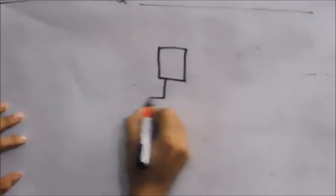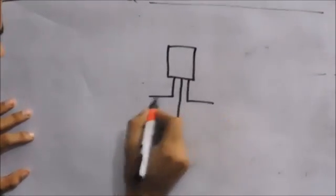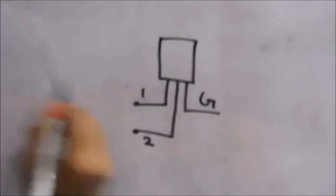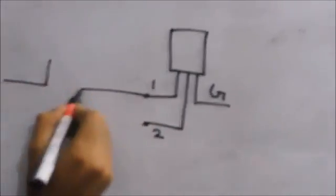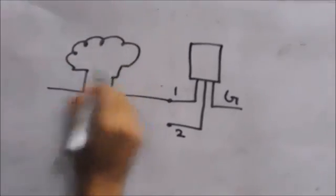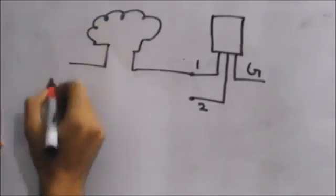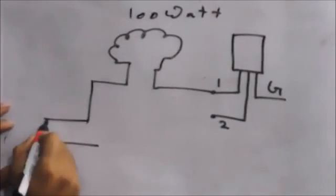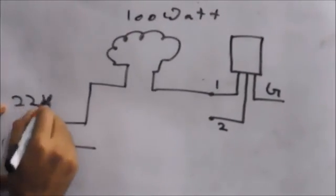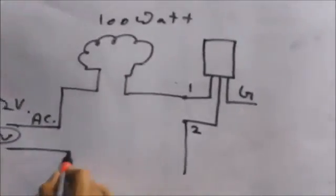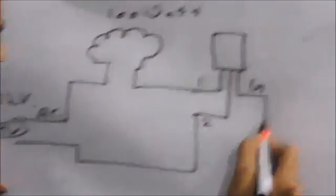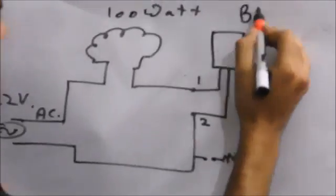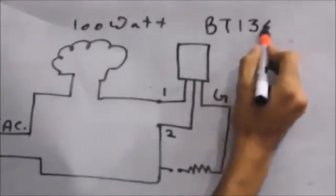The main component of the circuit is a triac. These are the three terminals: main terminal 1, main terminal 2, and the gate. Here we will connect our AC appliance — today we will be using a 100 watt bulb. This is our 220 volt AC power supply. This triac is the BT136.